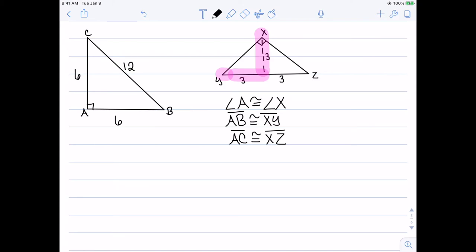And similarly, for the same reasoning, segment a, c is congruent to segment x, z. So now I have two sides that are congruent as well as the included angle.